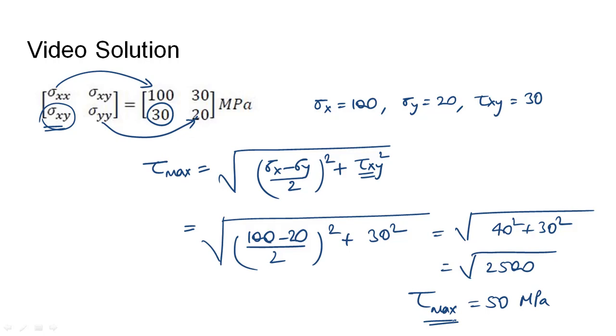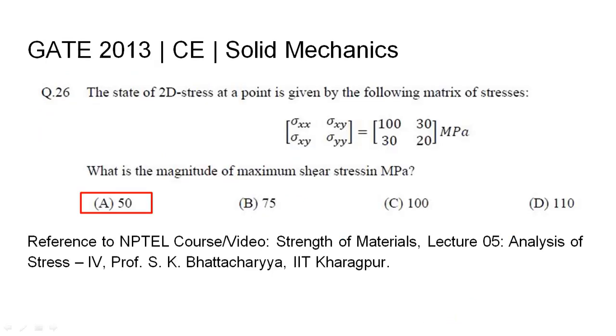The magnitude of maximum shear stress was found to be 50 MPa, which corresponds to option A. The relevant NPTEL reference has been cited.